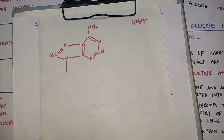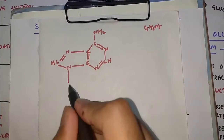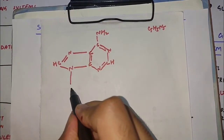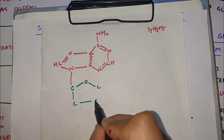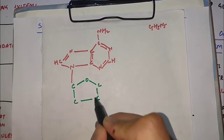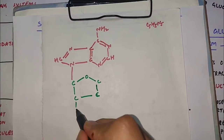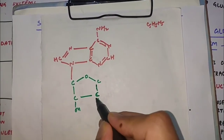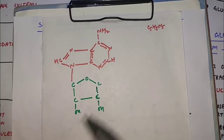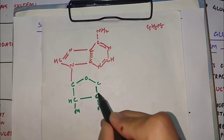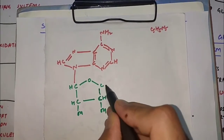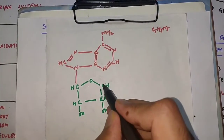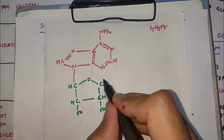Now we draw ribose. Ribose is a five-membered ring. First comes carbon, then oxygen, then carbon again, carbon, carbon — that completes the five-membered ring. On two of the carbons we attach OH groups. We satisfy the valency of each carbon with hydrogens. One carbon at the end has CH2 attached, since one hydrogen of CH3 is displaced by the phosphate group.